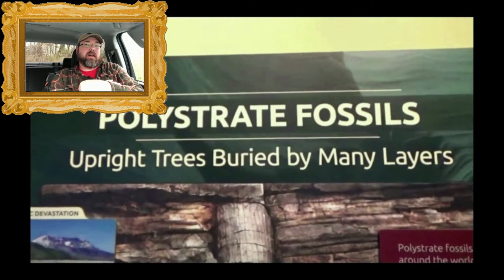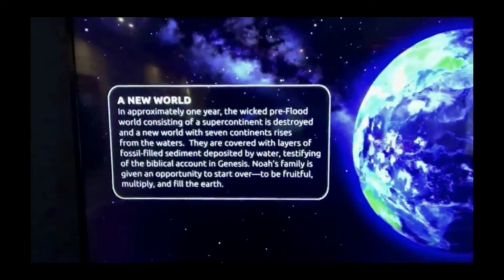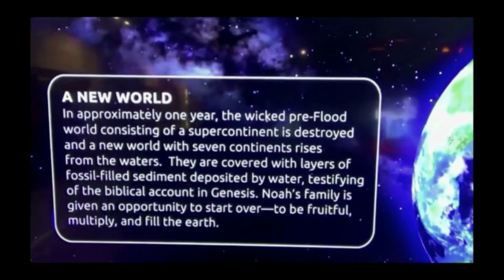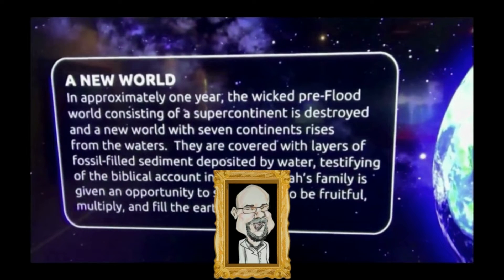Anyway, before this gets too long, I'm going to turn it back over to the host. [Host]: In approximately one year, the wicked pre-flood world consisting of a supercontinent is destroyed and a new world with seven continents rises from the waters. Wait a minute — I thought the waters receded. Anyway, they are covered with layers of fossil-filled sediment deposited by water, testifying of the biblical account in Genesis. Noah's family is given an opportunity to start over, to be fruitful, multiply, and fill the earth. That's a lot of stuff to occur in one year. I'm not buying it.